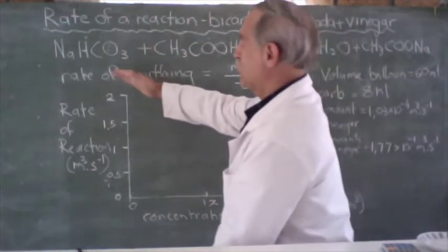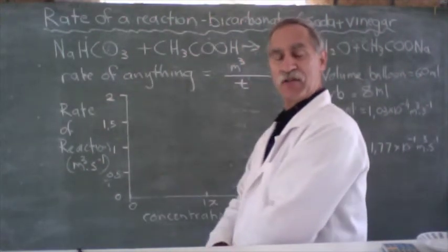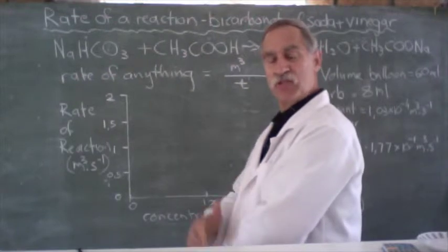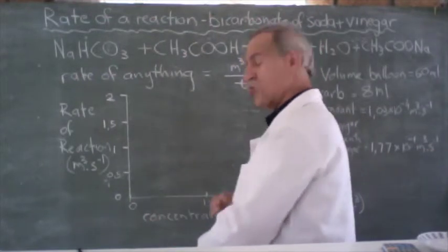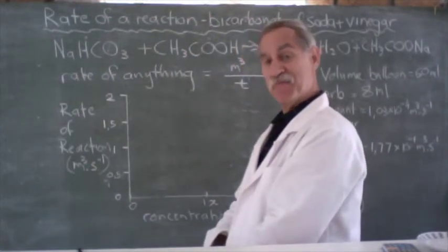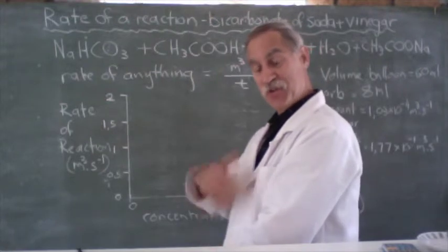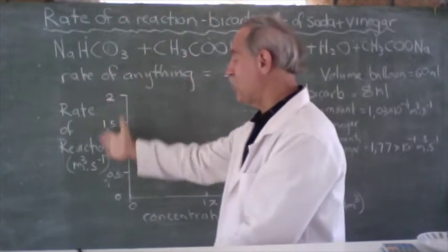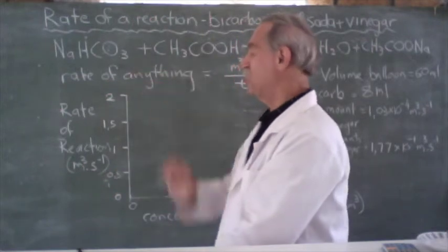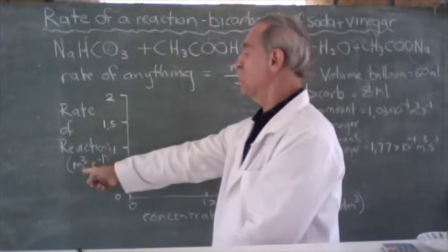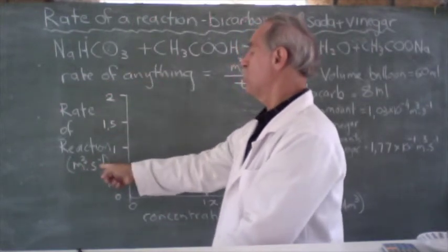Then, we've got the thing which is our dependent variable that depends on the concentration. And, that is time, or rate of reaction. So, we timed it, and we worked out a rate of the reaction, and that we're putting on our vertical axis: rate of the reaction measured in meters cubed per second.